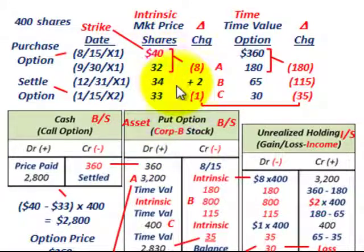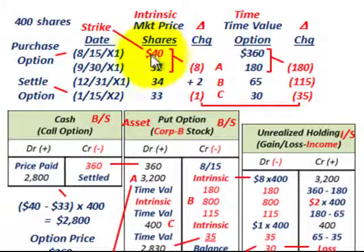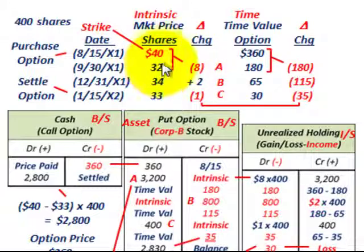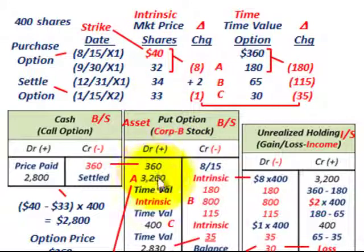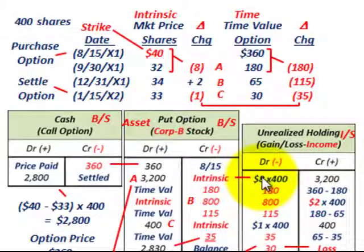So now let's look at how we'd actually make the recording. First, looking at the intrinsic value — that's the market price. We start out with the market price at $40, which is our strike price of $40. On our first date, the stock price went down to $32 per share, a decrease of $8 per share. When you have a decrease in your market price, you can purchase the shares for a lesser amount than the strike price, so the difference gives you a gain. The decrease in market price increases the put option — $8 per share times 400 shares equals $3,200.